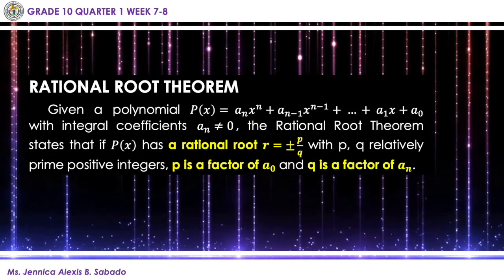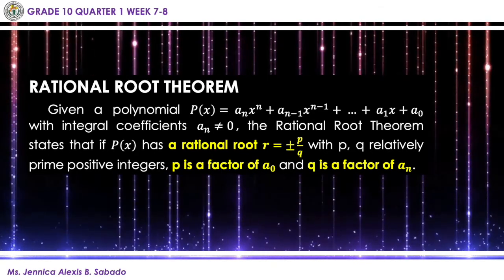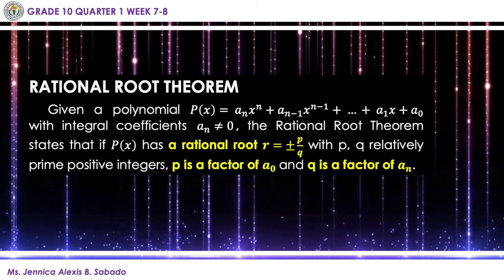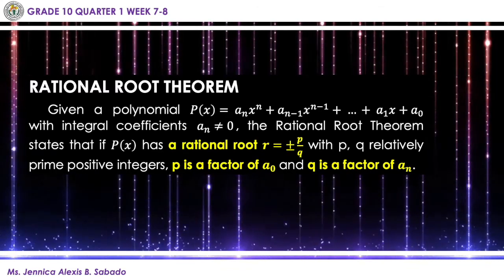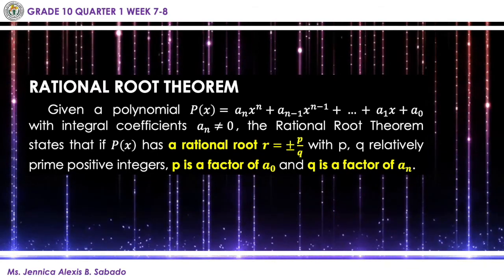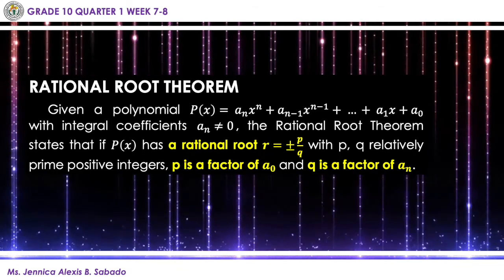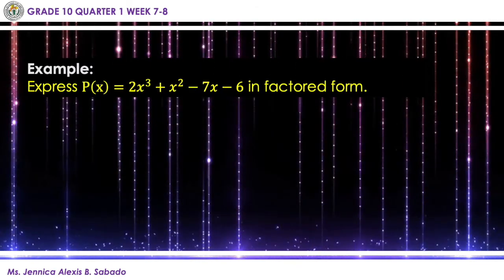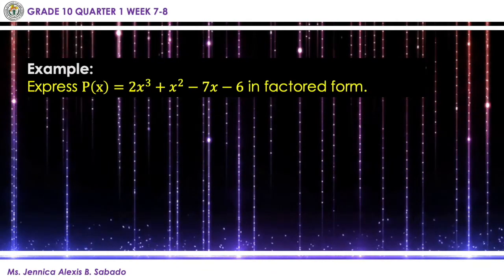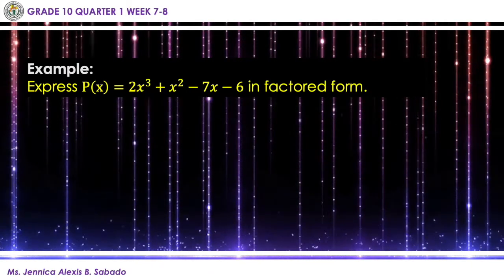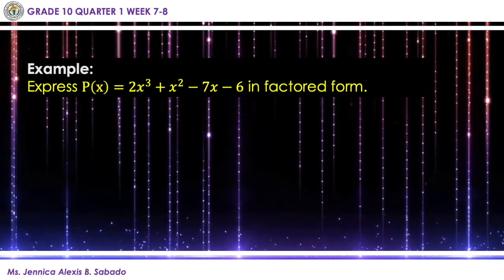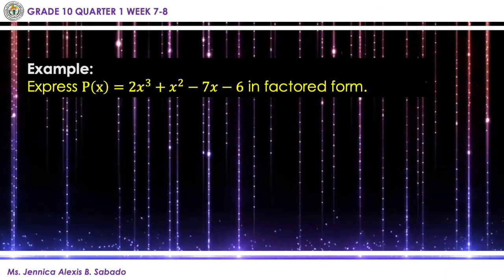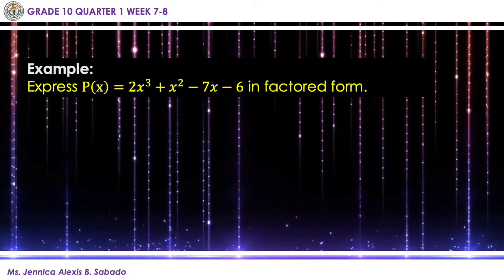When we speak of the rational root theorem, this minimizes our choices to find the roots of polynomials. Instead of trying all possible numbers from one to infinity, we can now minimize it by finding the factors of your constant term and your leading coefficient. Get the factors, pair them up to check for possible fractional values of x, and try each factor until you find all values of x.